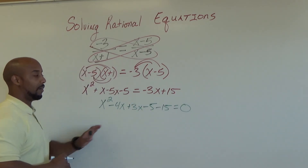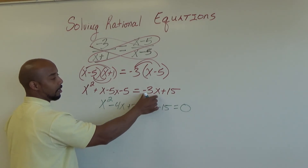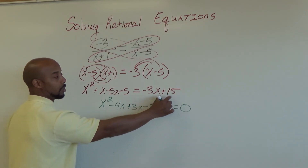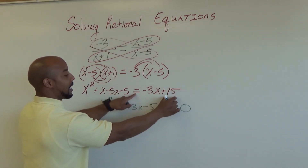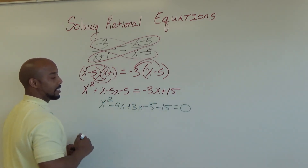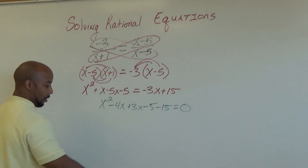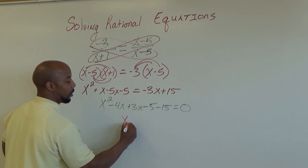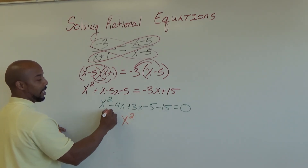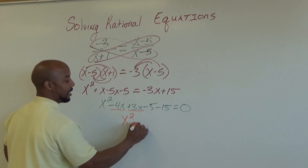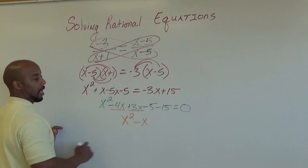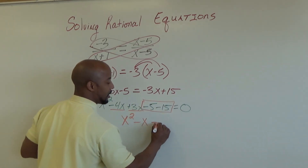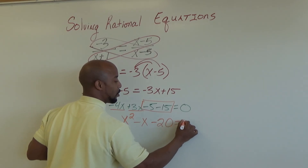Doing so, we will have nothing on the right-hand side of the equal sign. The negative 3x moved to the left changes sign. From here we combine like terms: x squared comes down. Negative 4x plus positive 3x gives negative 1x. The constants negative 15 and negative 5 give negative 20. So our equation becomes x squared minus x minus 20 equals 0.